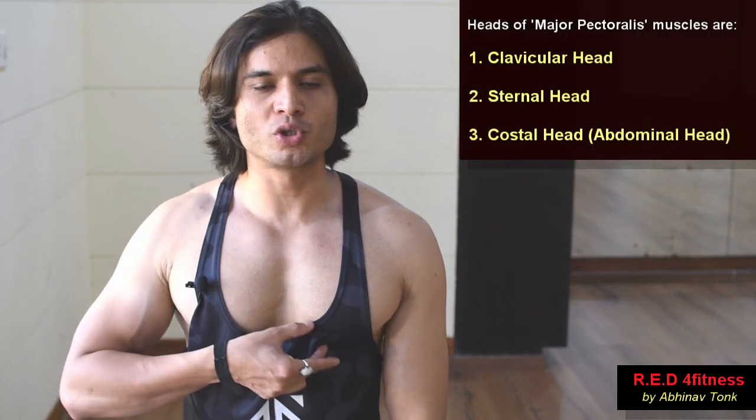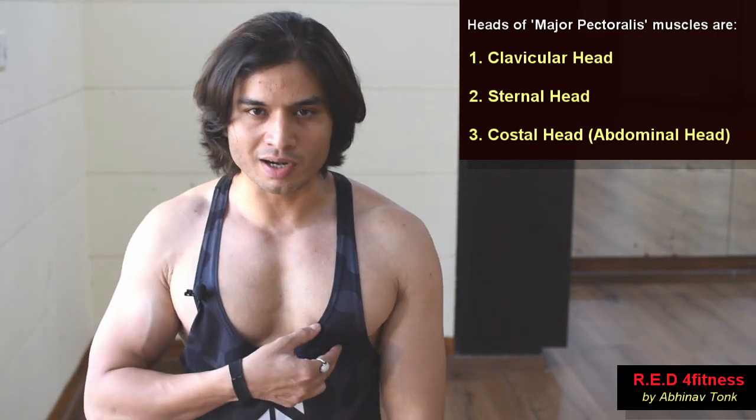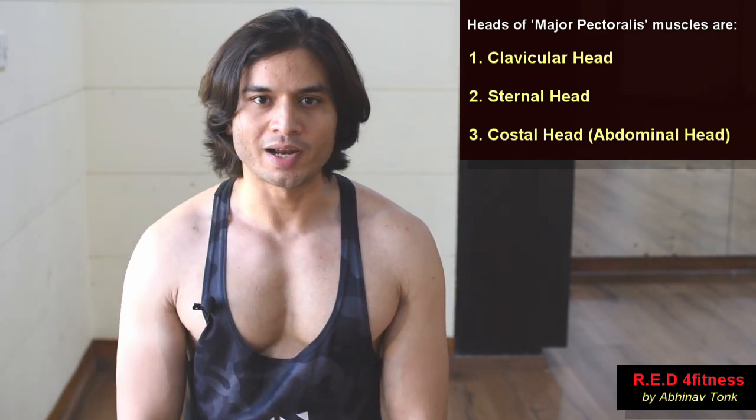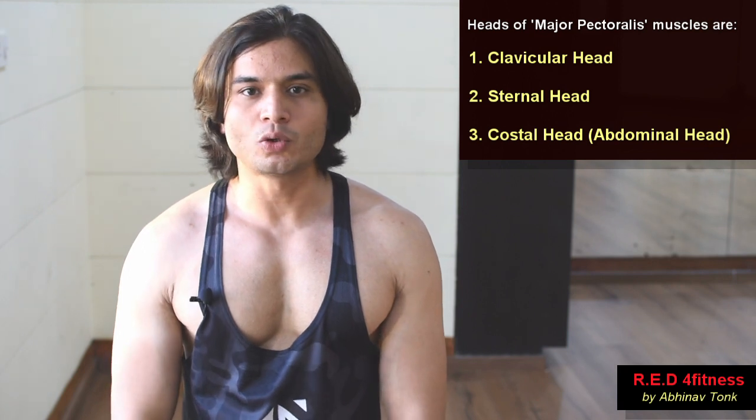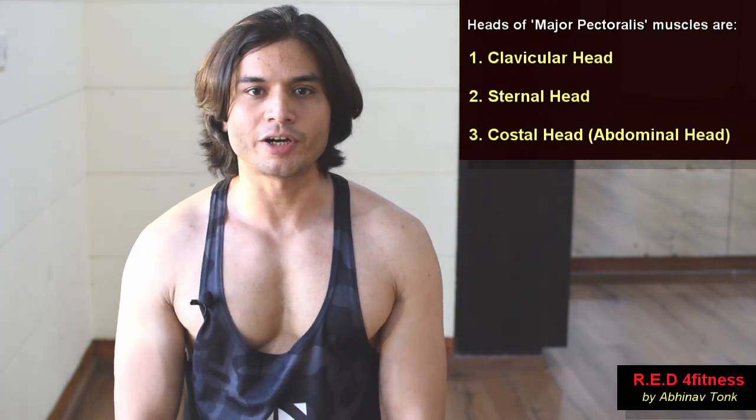The collarbone is called the clavicle. The pectoral muscle next to this clavicle is known as the clavicular head. Next comes the sternum — the bone-like structure to which the ribs are attached. The pectoral muscles originating from the sternum are known as the sternal head. The third is the costal head, which is the lowermost portion of muscles attached to the costal cartilage. The sternal head and costal head are collectively known as the sternocostal head.